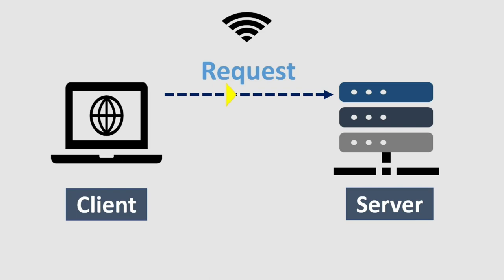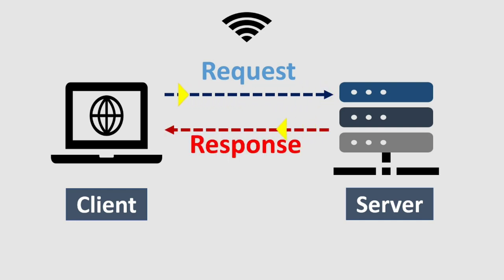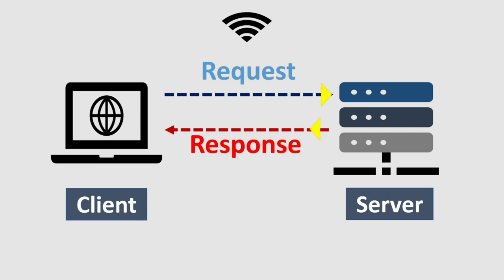If you want to request content as a client, you can request a URL. The client sends a request and the server responds. The most important thing is sharing information across the internet. This is the network.